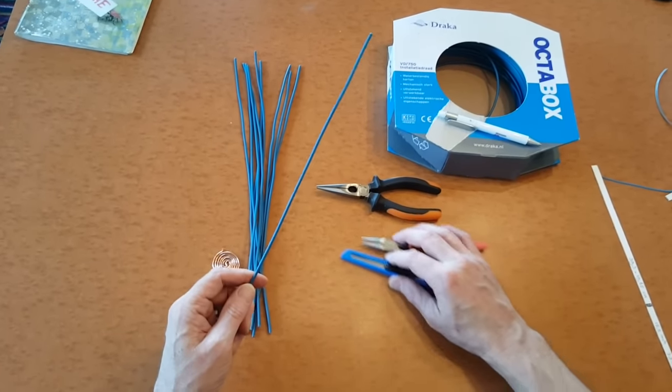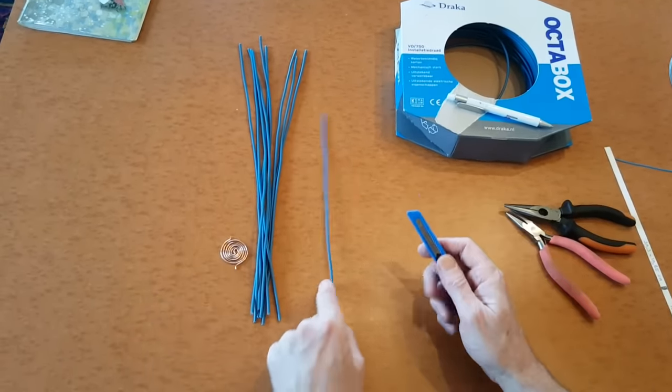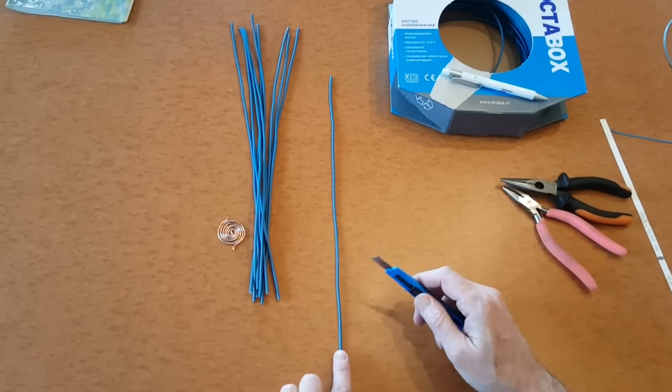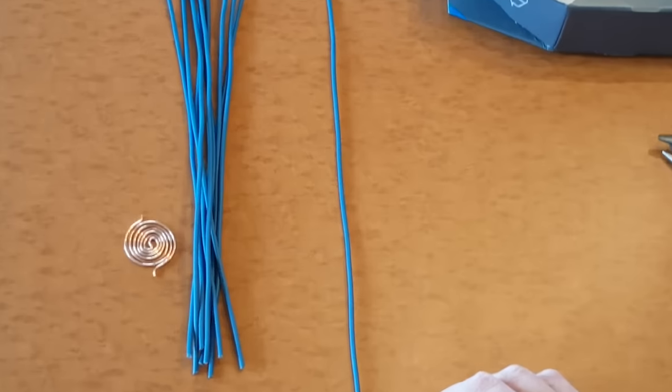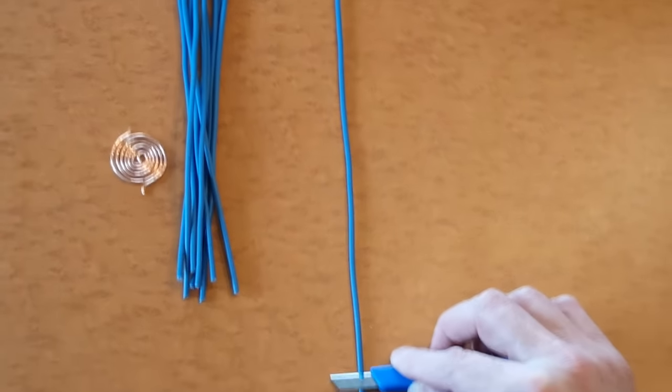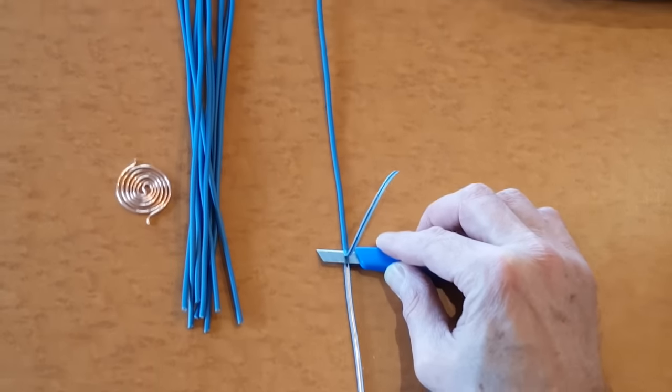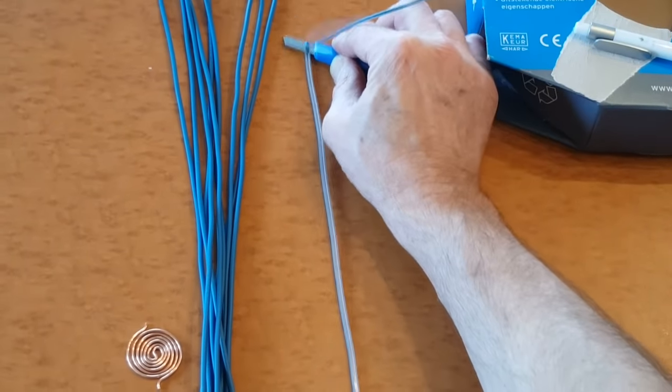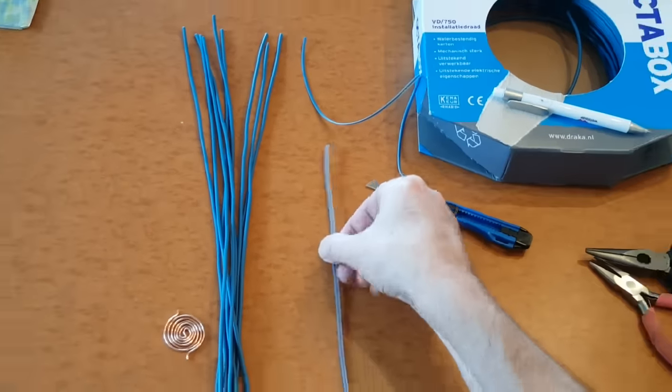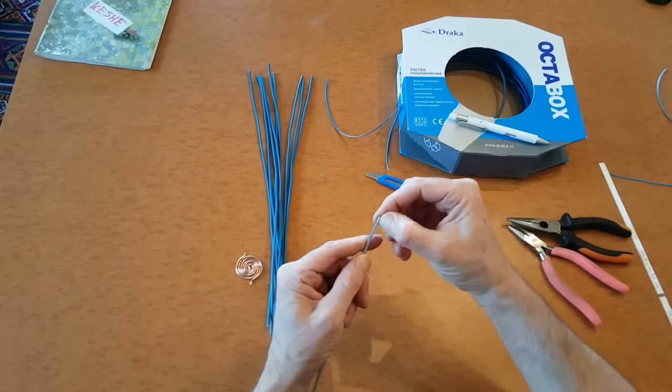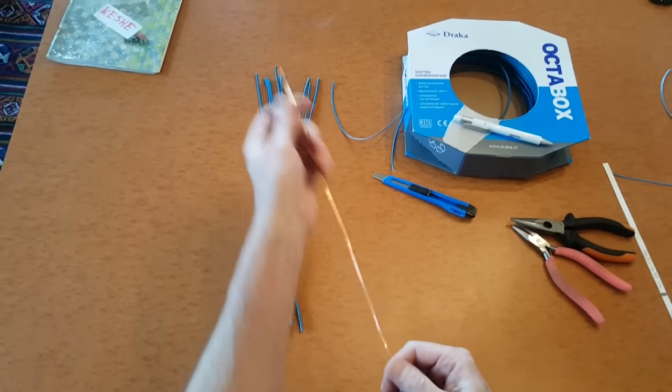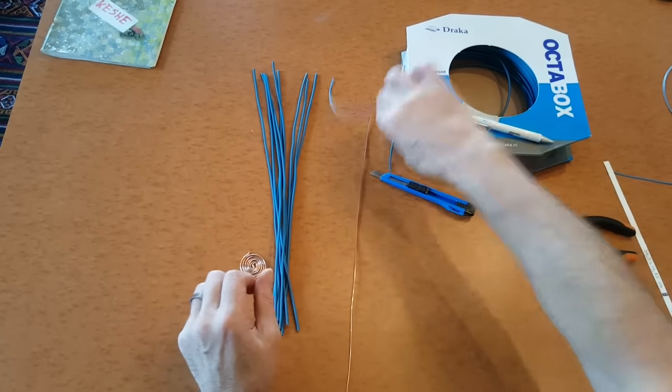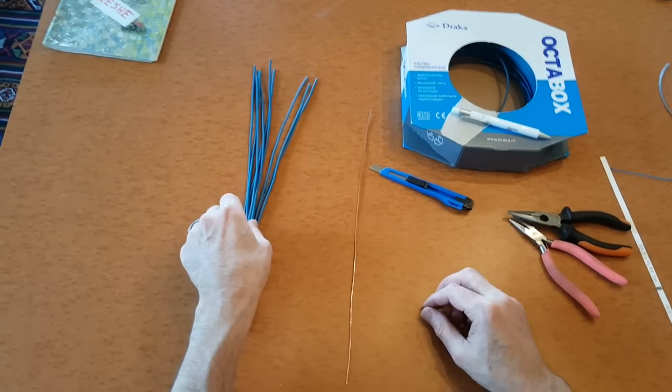The stripping is the first part. I'll put it flat on the table. I have this little cutting knife. I put my hand on it, make sure it doesn't slide off, and I strip it like this in one go. I take the tip off, turn it off, and here I have one copper wire.